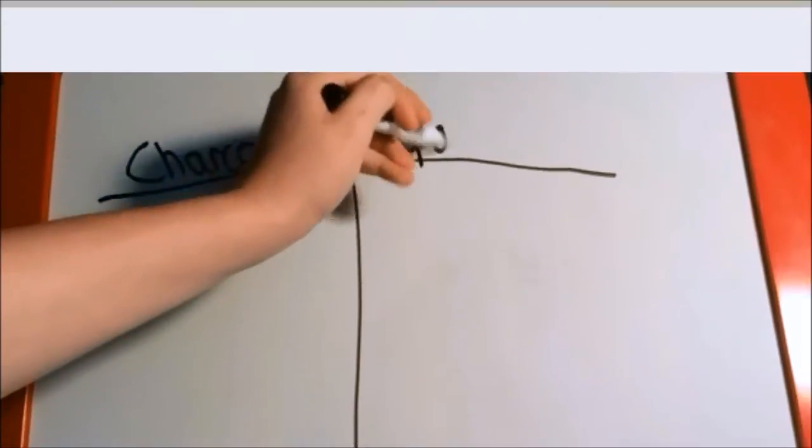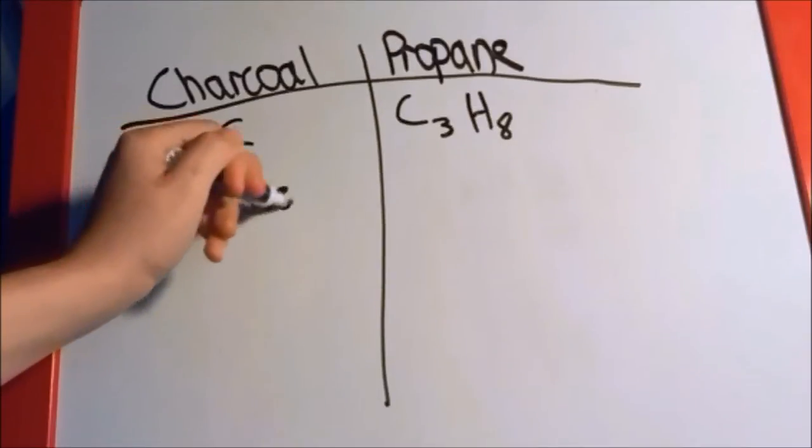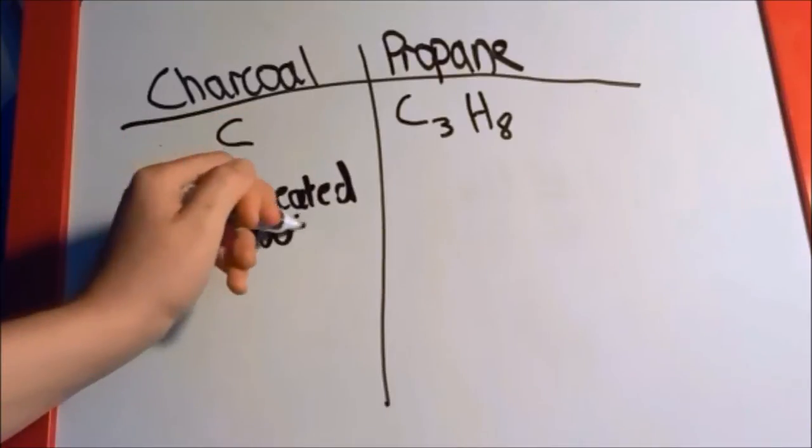Charcoal is solely made up from carbon and is created by heating wood at a temperature of a thousand degrees Fahrenheit for around three to four days.